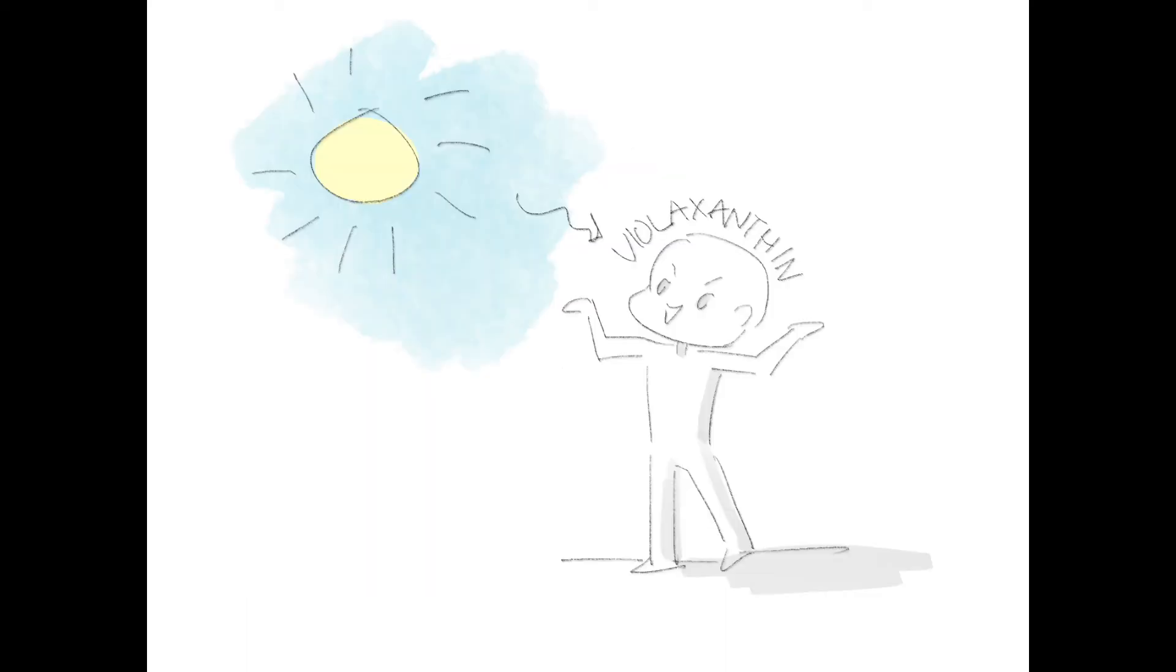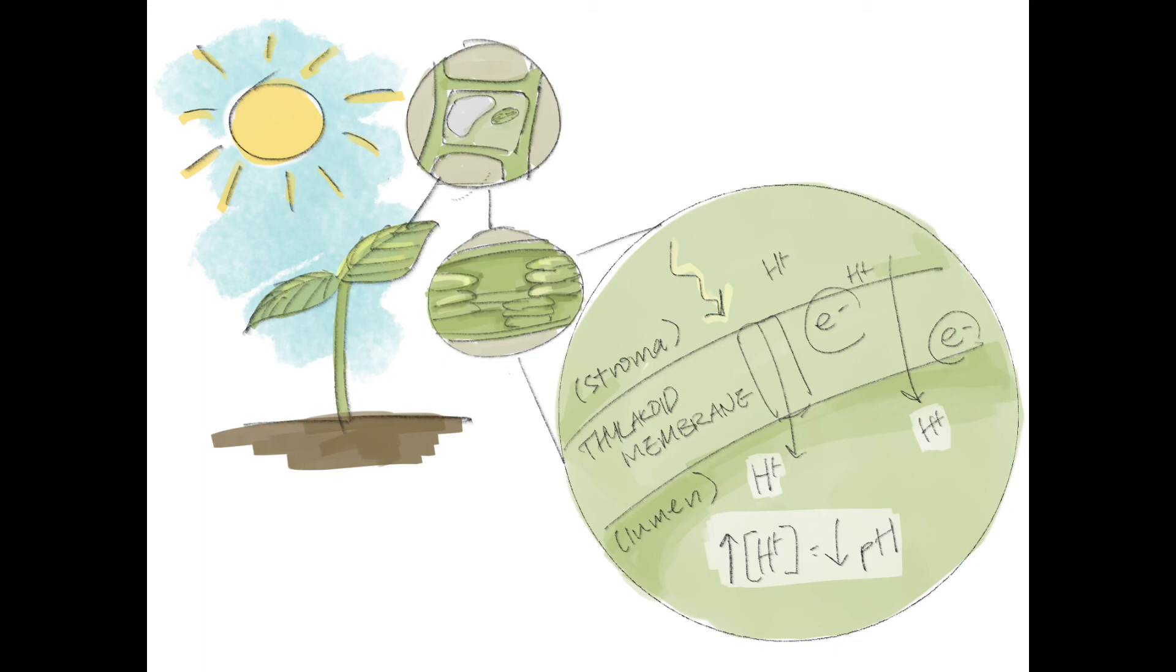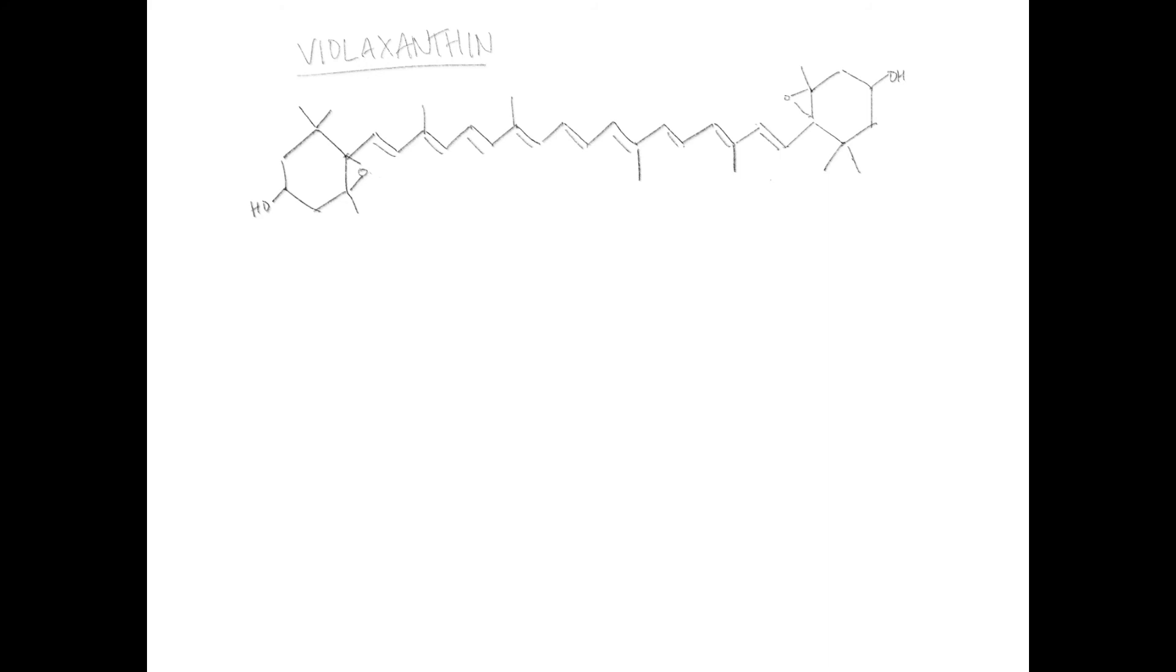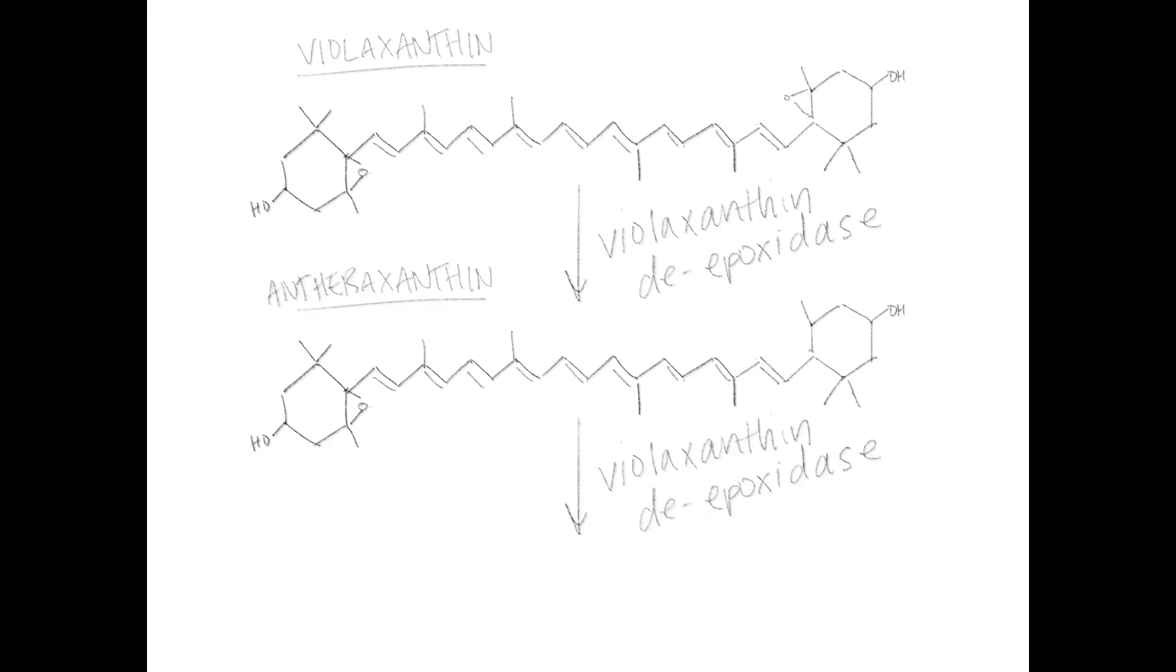In normal conditions violaxanthin in photosystem II functions as a light harvesting pigment. In high light conditions, however, pH in the thylakoid lumen decreases as protons are pumped in by electron carriers in the membrane. This creates an acidic environment that activates an enzyme called violaxanthin de-epoxidase. Violaxanthin de-epoxidase removes epoxide groups from violaxanthin so that it is converted into antheraxanthin and ultimately to zeaxanthin.